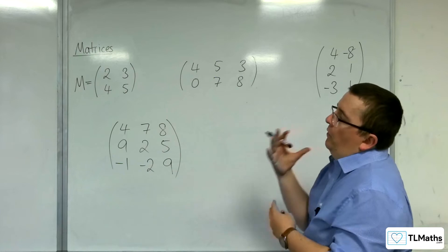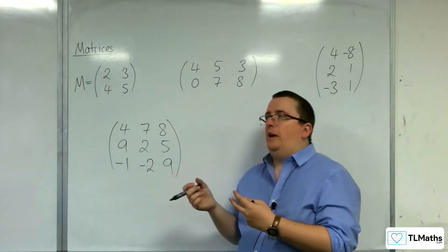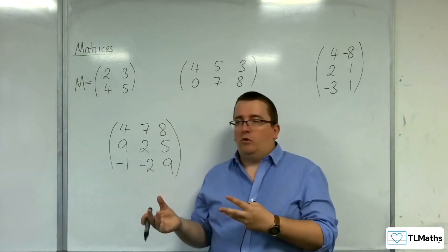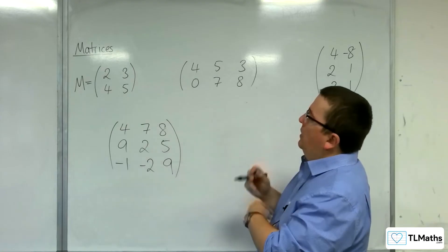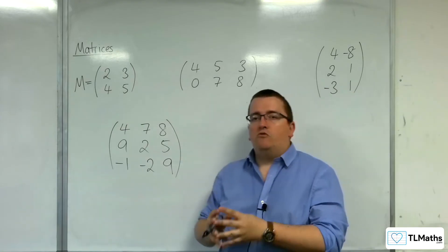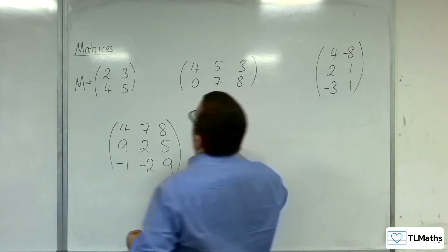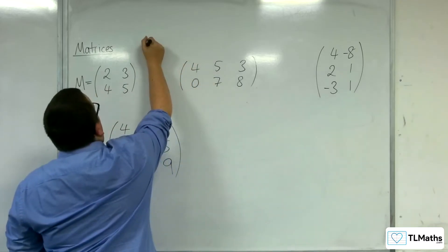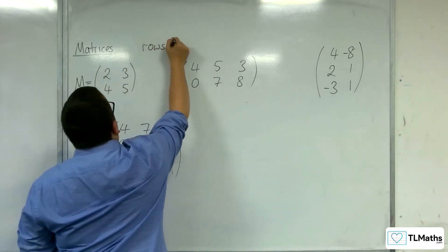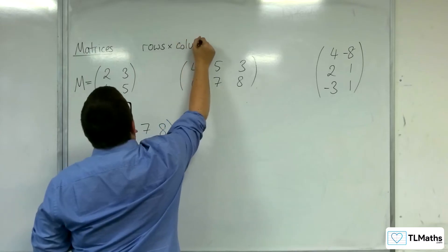And you'll also often hear us talking about the order of a matrix. This is to do with the number of rows and columns, and the way that we describe it is looking at rows first and then columns.